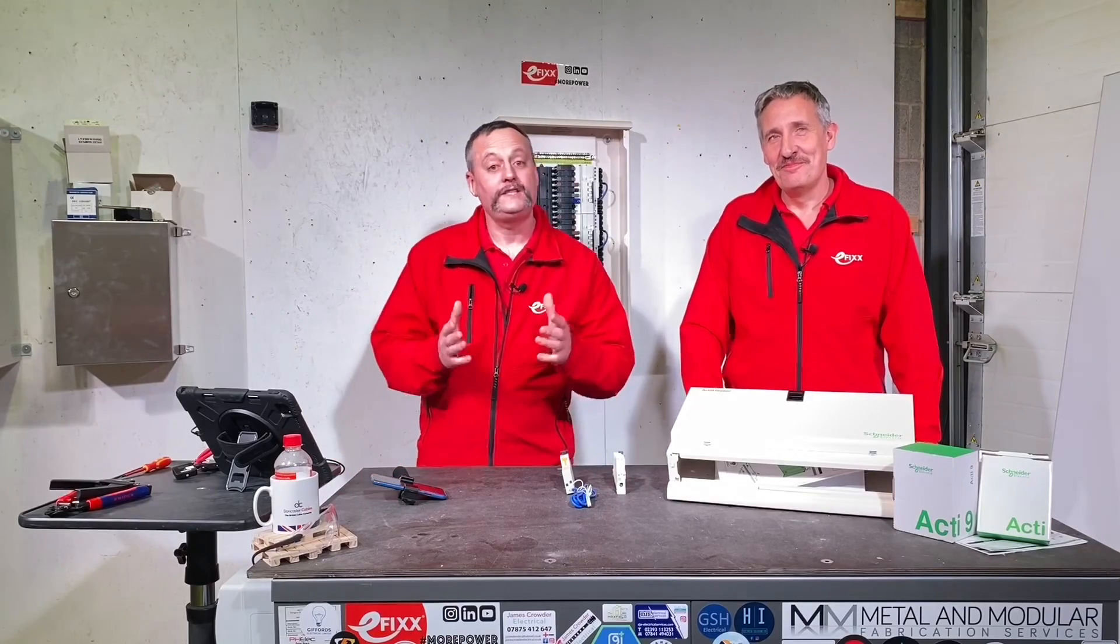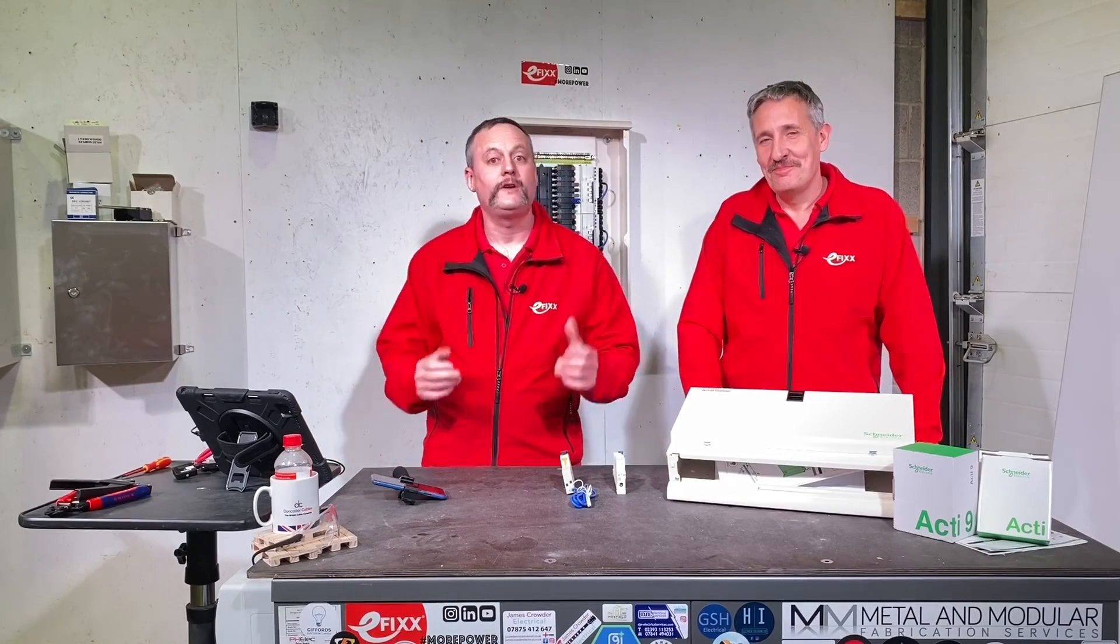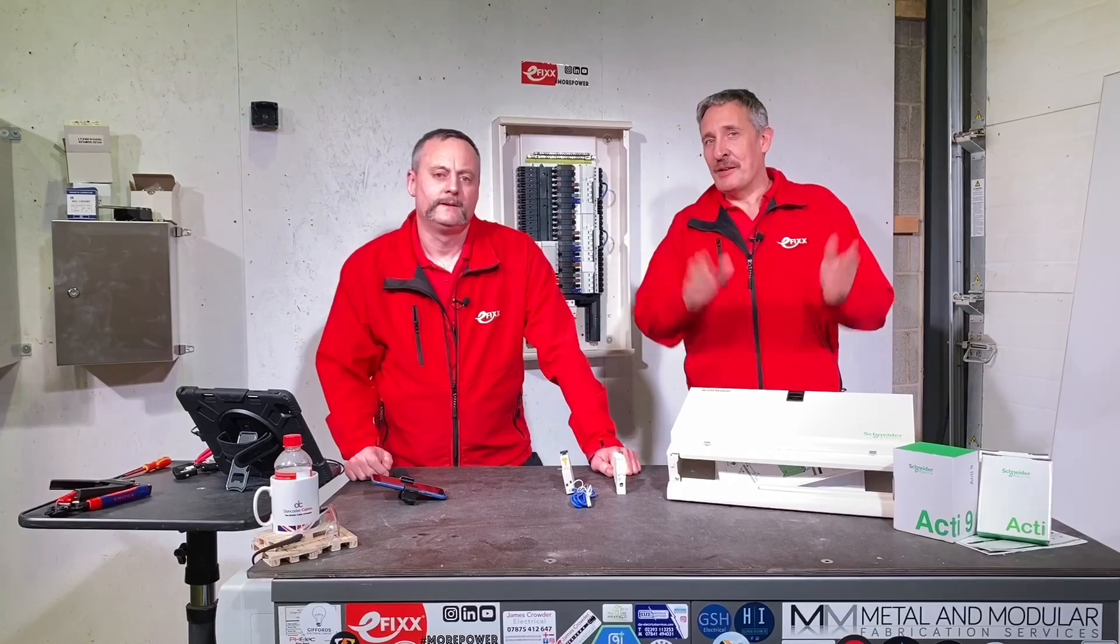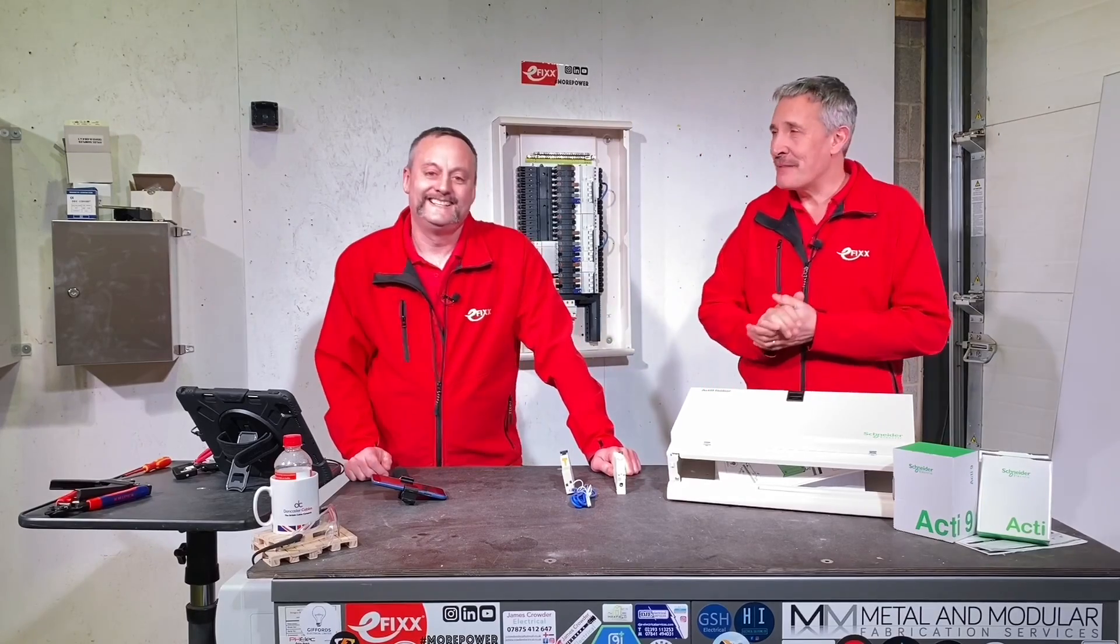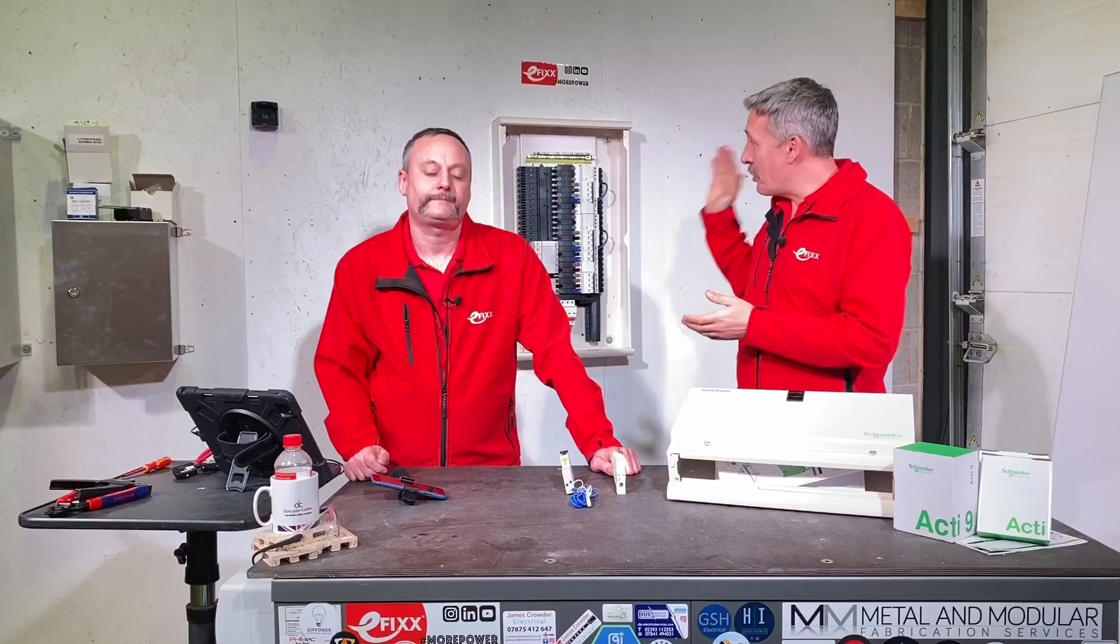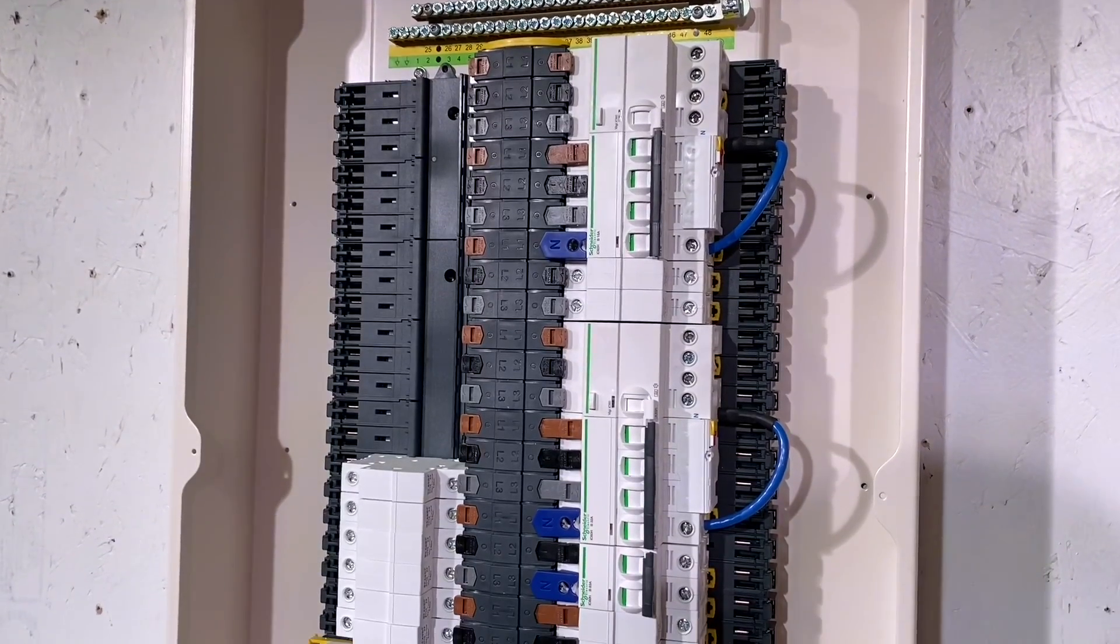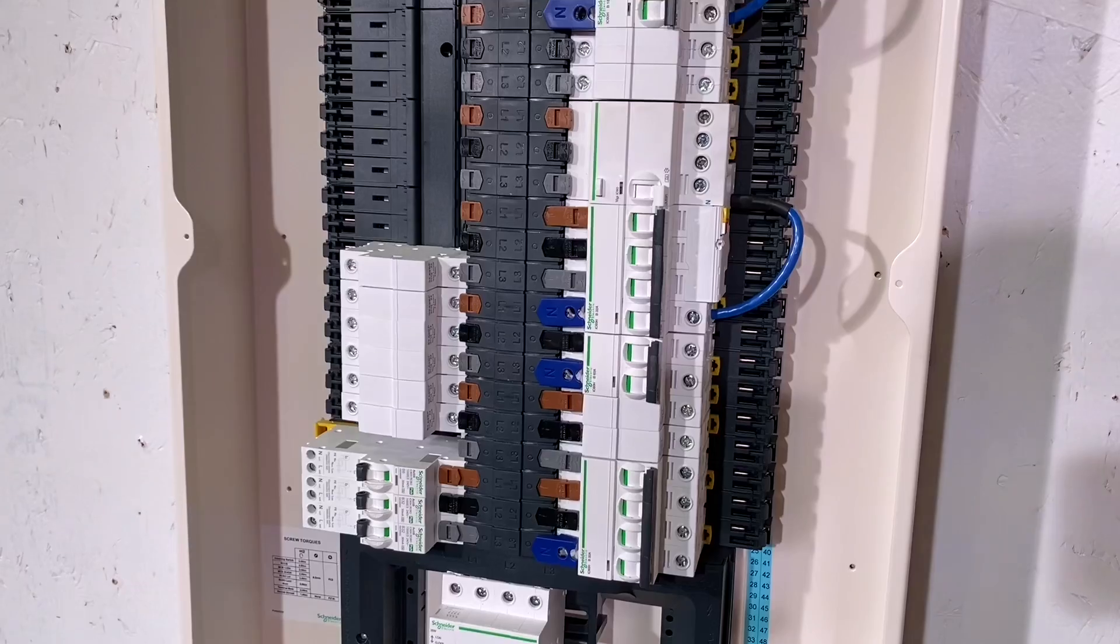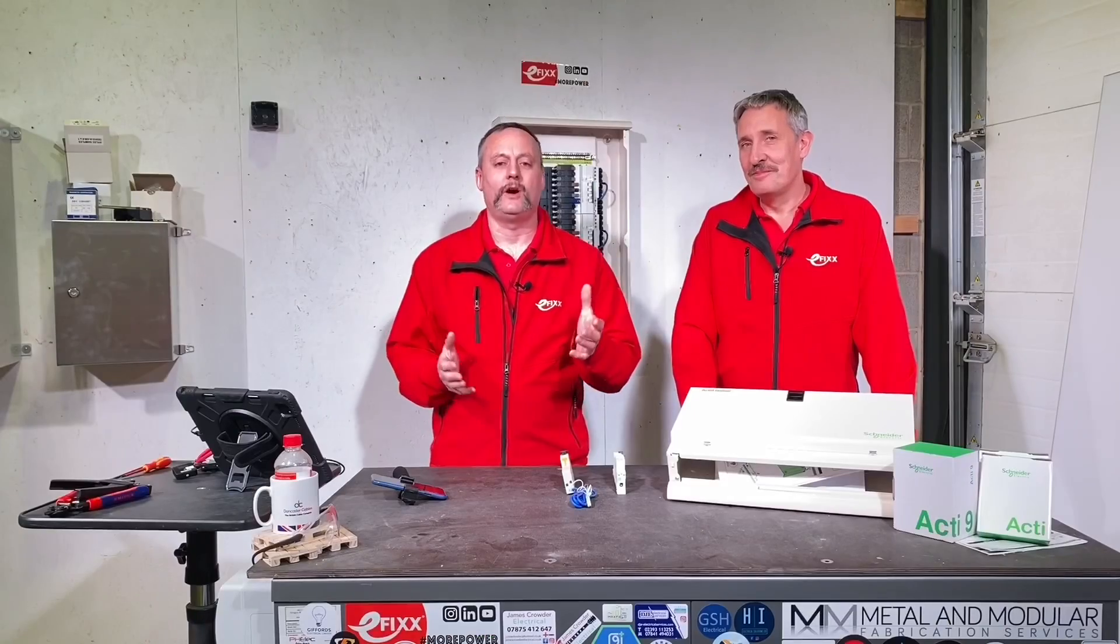Today we're going to look at the Acti9 Isobar P distribution boards from Schneider Electric. The Acti9 range from Schneider is something you're going to be seeing quite a bit of on the channel over the next coming years because the board behind us is one we've specified for the rewire of our own industrial unit. And if we've picked it, it must have features that save electricians time, and you know how we love that at efixtv.